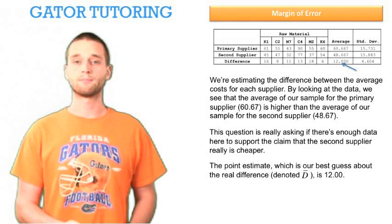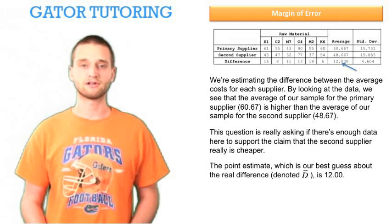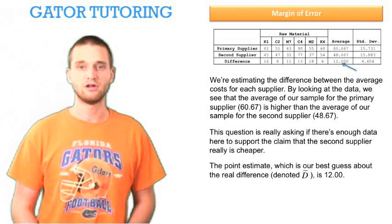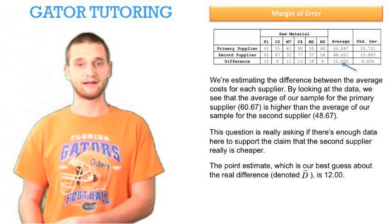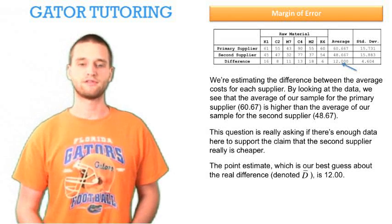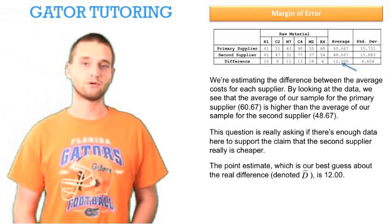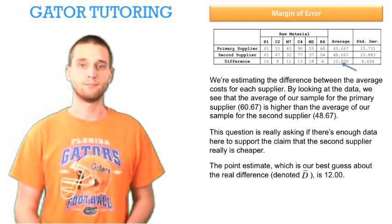But first we need to know our point estimate. And our point estimate, which is just our best guess about the real difference, which we denote d bar. D bar just means it's an estimate, which separates it from the actual d, which is what we're trying to estimate without the bar. And our best guess for the difference in the estimates, d bar, is 12. And that's given to us in the table here. It's just the difference in the sample costs for the two methods.